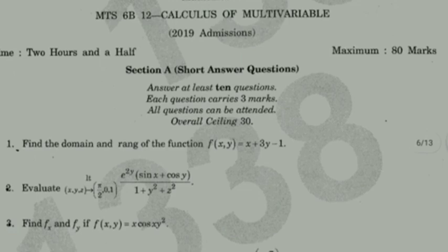Find f_x and f_y if f(x,y) = x·cos(xy²). We compute partial derivatives of x·cos(xy²) with respect to x and with respect to y.